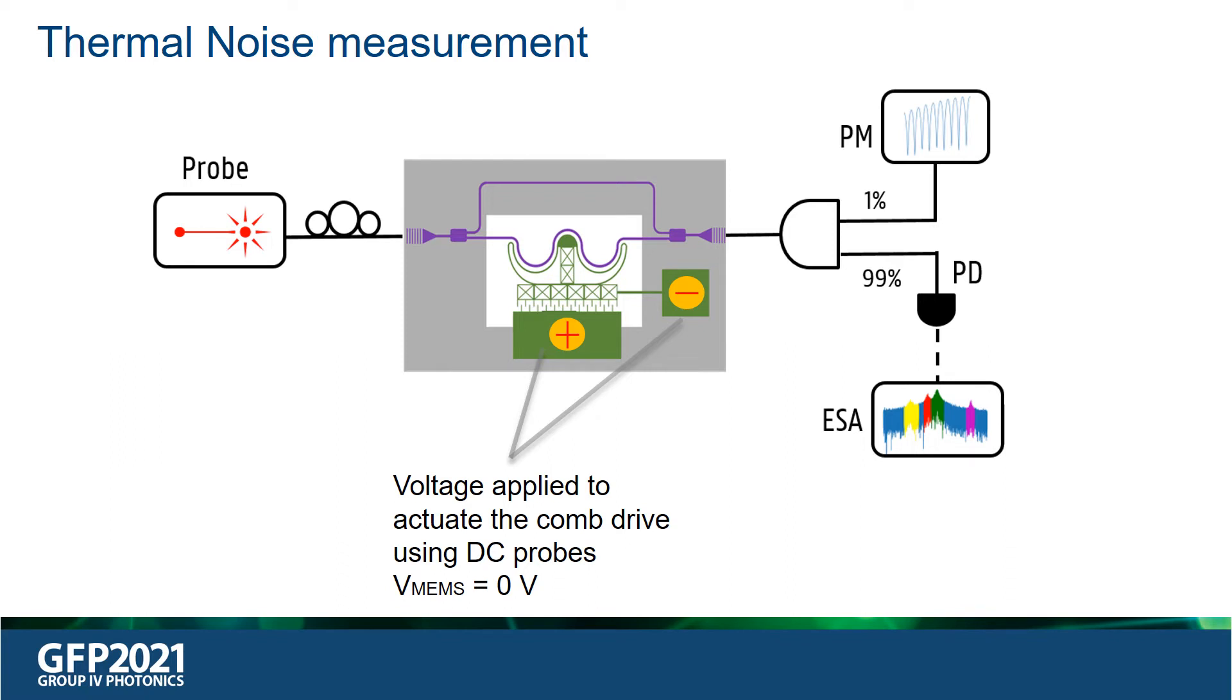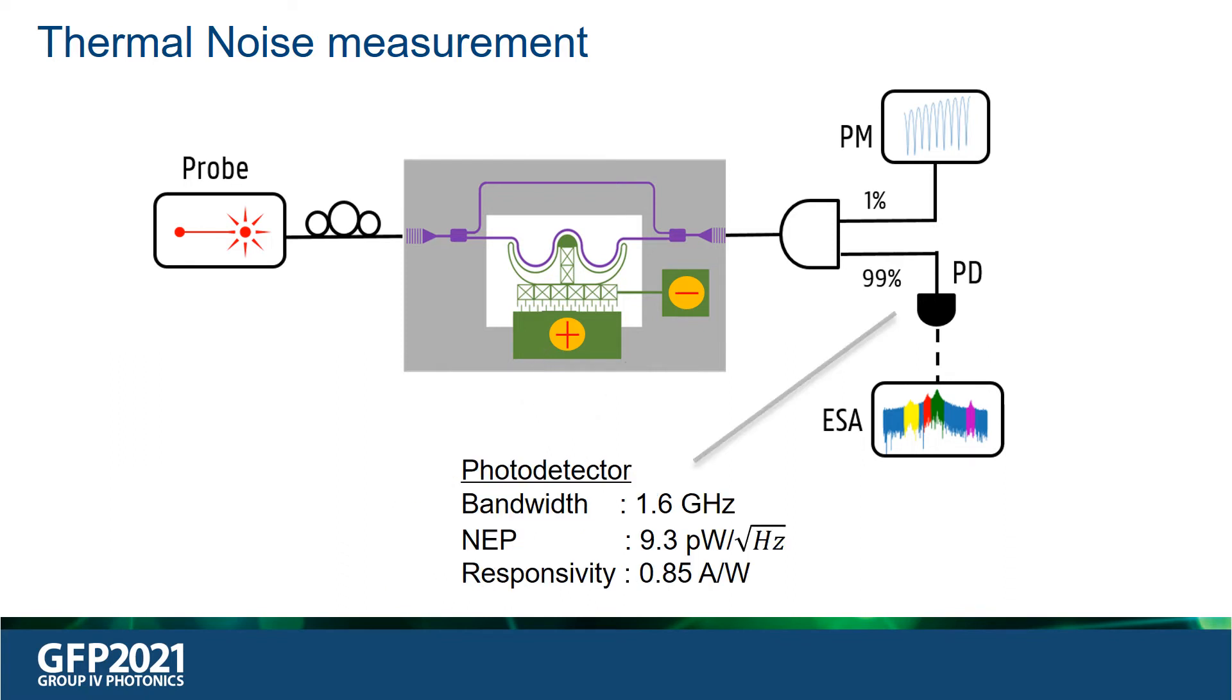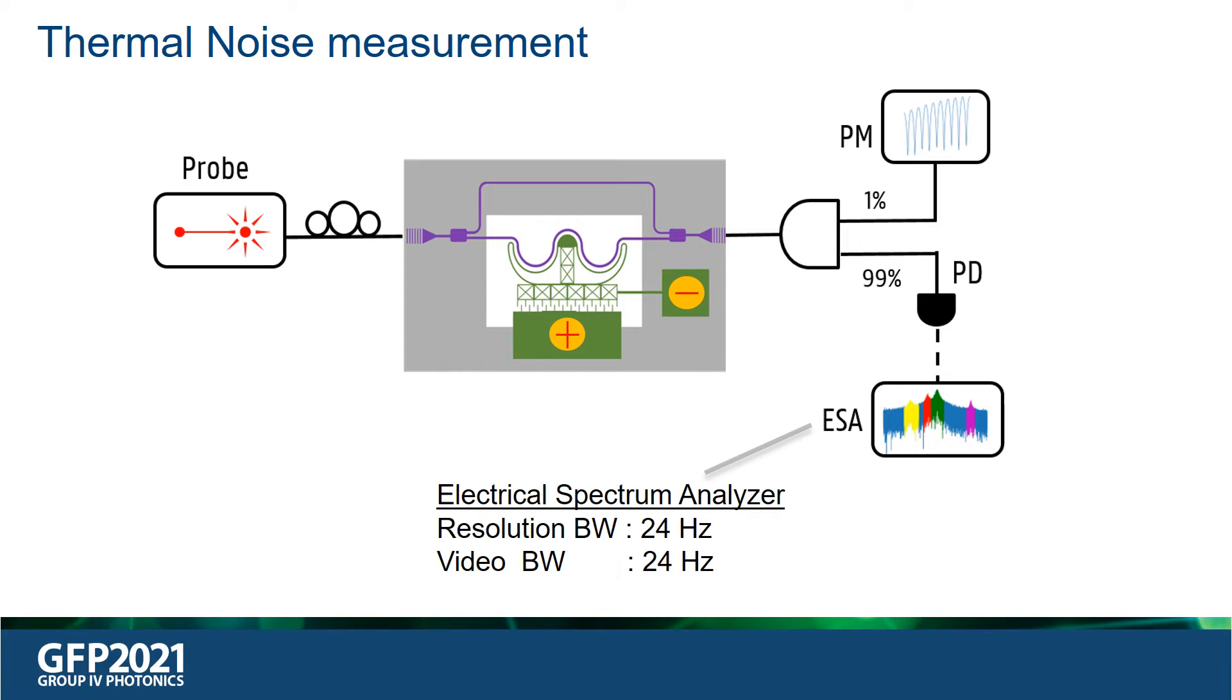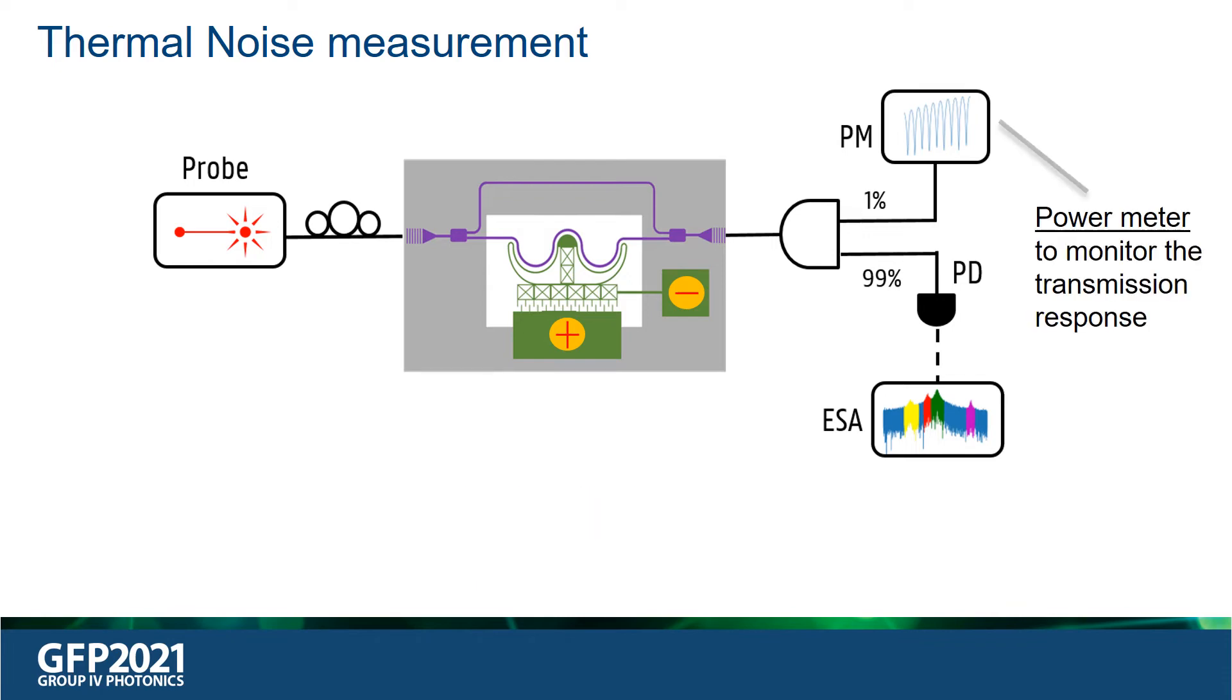The thermal noise modulated light from the device is split using a 99 to 1 splitter. The majority of the light is incident on a photodetector with a bandwidth of 1.6 gigahertz and a noise equivalent power of 9.3 picowatt per root hertz. The RF output from the photodetector is fed to an electrical spectrum analyzer with a resolution bandwidth and a video bandwidth of 24 hertz. The 1% tapped optical power is used to continuously monitor the transmission response of the device using a power meter.